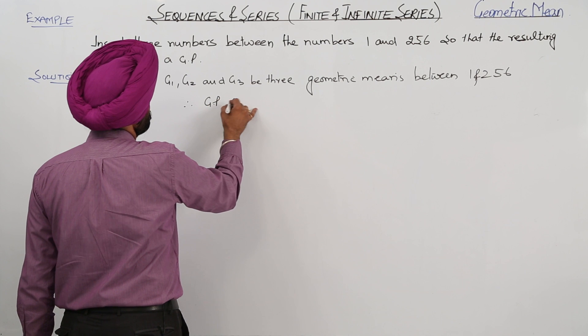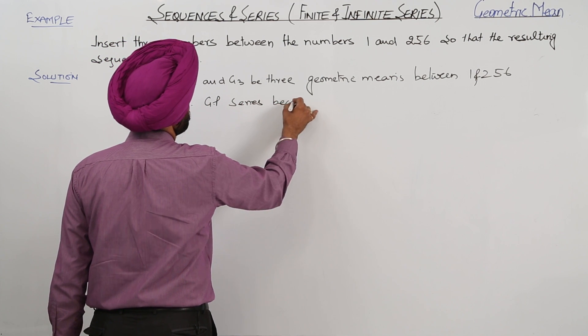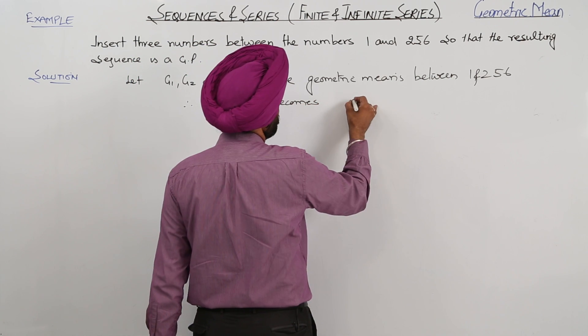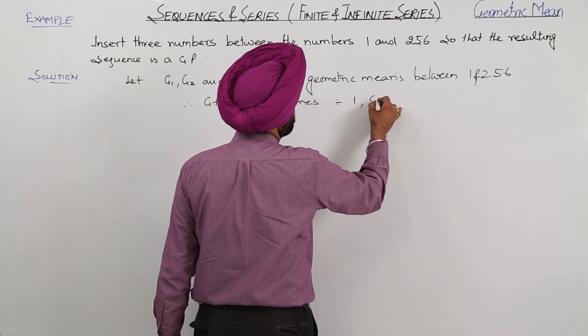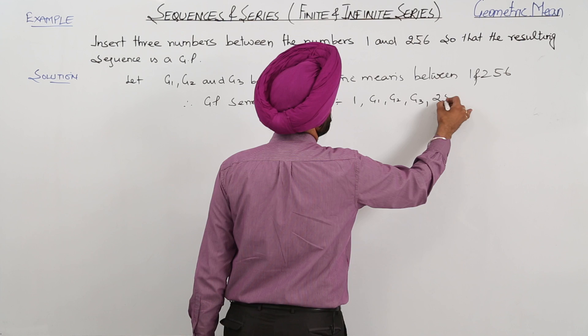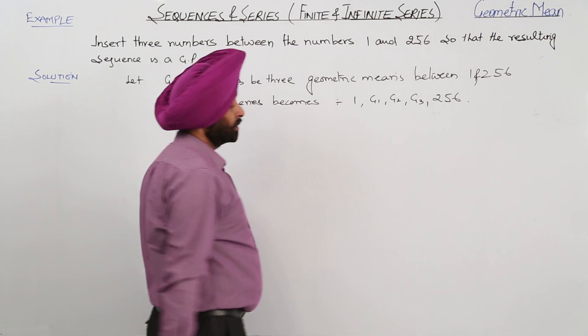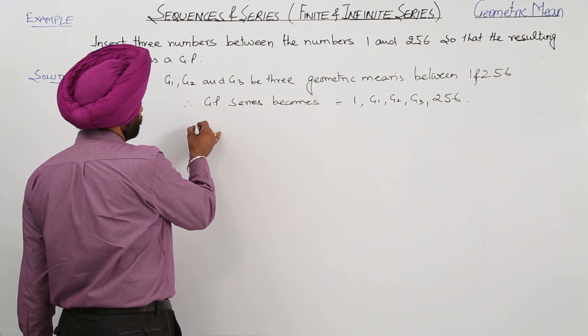Therefore, the GP series becomes 1, then G1, G2, G3, and 256. Now the total number of terms is 5. We can write it.